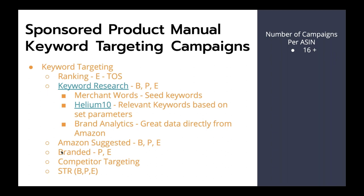Next, we like to use Amazon suggested keywords. This typically doesn't do fantastic on a launch because if you pull a manual campaign on a brand new ASIN and look at the suggested keywords, it's not nearly as clean as doing the same thing for an ASIN that has history. So if you have history, we love looking at Amazon suggested keywords — again broad, phrase, exact, three different campaigns. It's a quick and easy way for quick wins and it's really scalable.